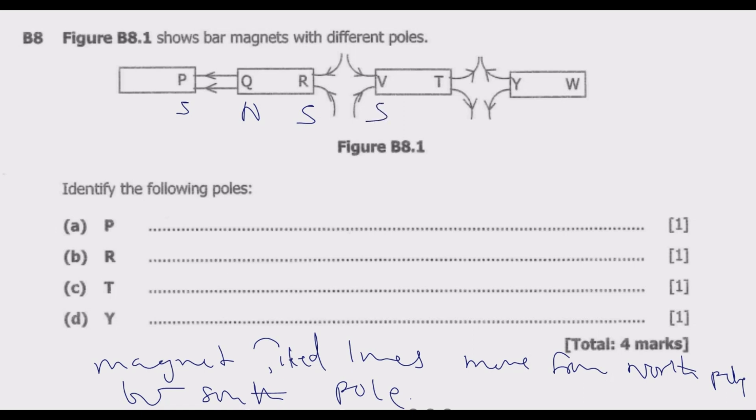Then T, they are coming out of T. So T should be north. Then Y, they're also coming out, should be north. W should be south. This is how you identify them.